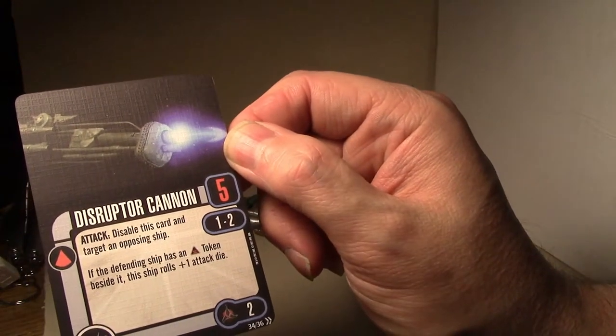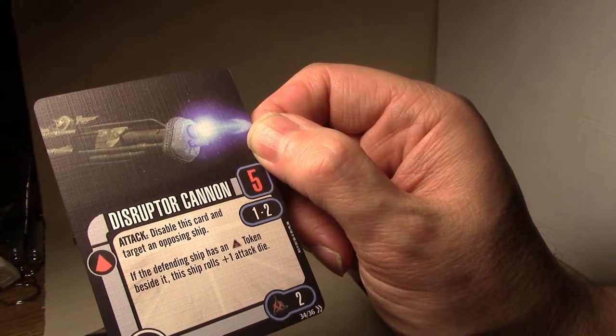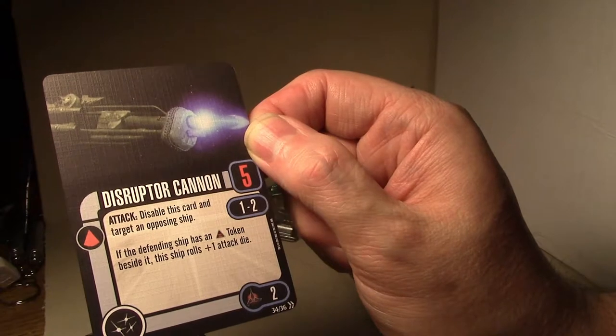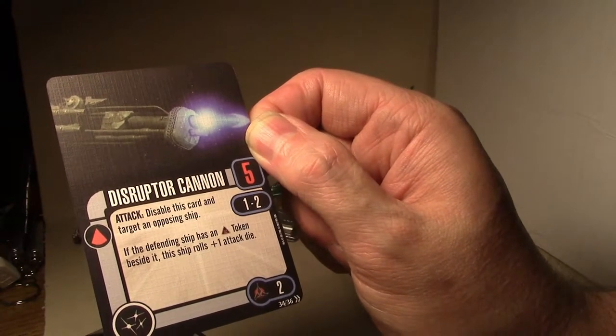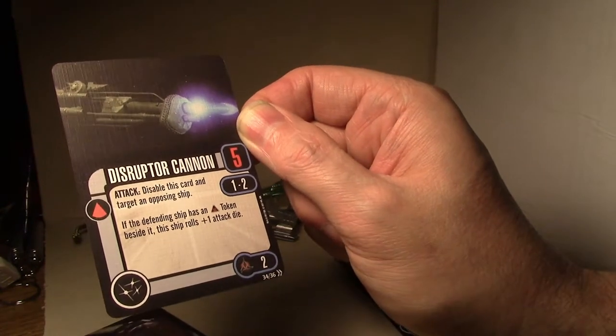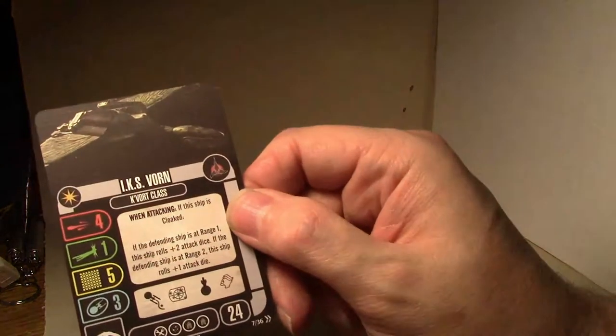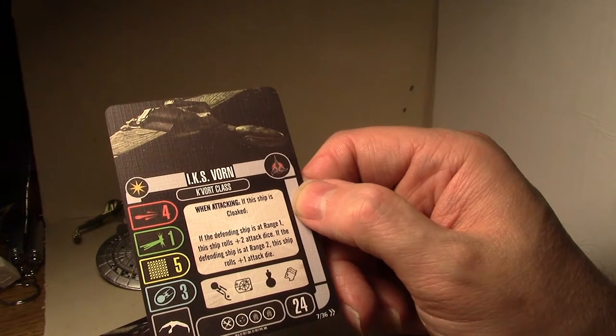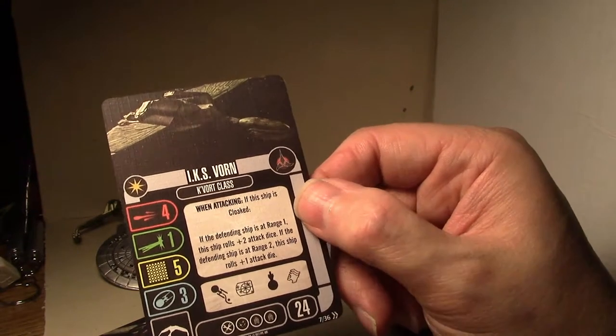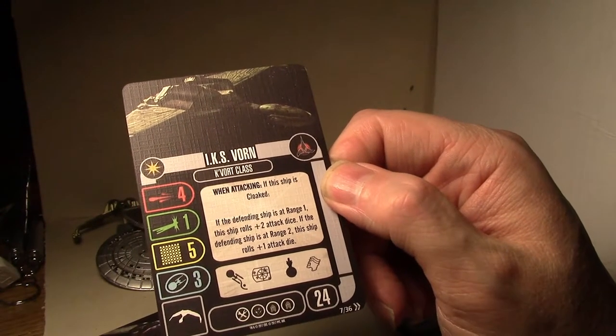Disruptor cannon. Attack. Disable this card. And target an opposing ship. The defending ship has an... Aux token beside it. It's your pulse of 1. Plus 1 attack die. So this is... Aux. Auxiliary. So it doesn't necessarily mean rear target arc anymore. It means auxiliary power target arc. And that's because the... The Vorcha class in this... Its aux arc is... In the front firing arc. I can show you that. I'm gonna have to dig that out to show you that. Definitely it has... So yeah. 2 points for a 5 point... Attack from your... Auxiliary target arc. Or... Auxiliary firing arc. IKS Korcha. Kavort class. When attacking the ship is cloaked. The defending ship is at range 1. It gains plus 2 attack dice. If the defending ship is at range 2. The ship gains plus 1 attack dice. So it actually adds a bonus to the... To the range if it's cloaked. Not bad for 24 points. A couple point discount over the old... Kavort classes. And that could be... At range 1 you're throwing 6 dice. That's not too bad. Not too bad at all.